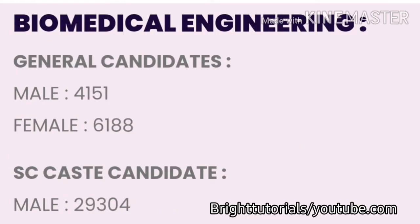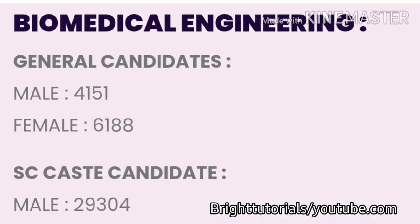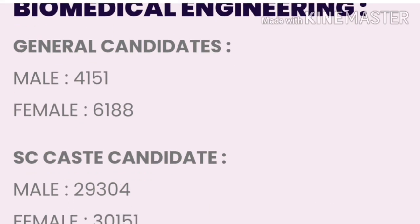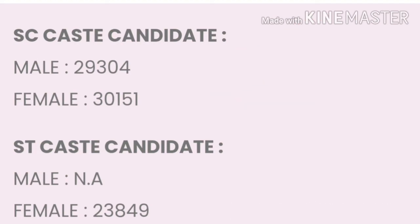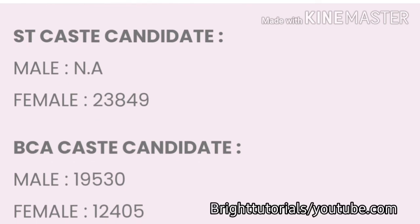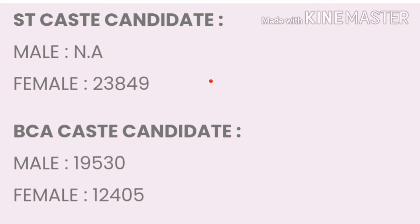Now we will see the cutoff of Biomedical Engineering at OU. For general candidates: male cutoff is 4151 and female cutoff is 6188. For SC caste: male cutoff is 29304 and female cutoff is 30151. For ST caste: male cutoff is not available and female cutoff is 23849.